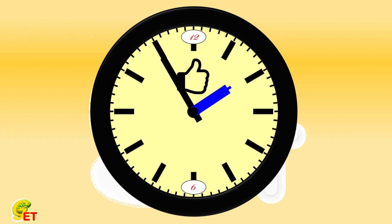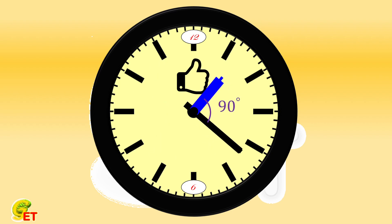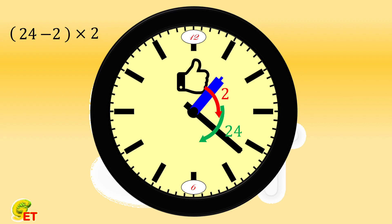One is when the minute hand leads the hour hand by 270 degrees, and the other is when it leads by 90 degrees. In 24 hours, the minute hand rotates a total of 24 rounds, whereas the hour hand rotates 2 rounds. 24 minus 2 means the minute hand has caught up with the hour hand 22 times. Each corresponds to two perpendicular positions, so a total of 44 times.